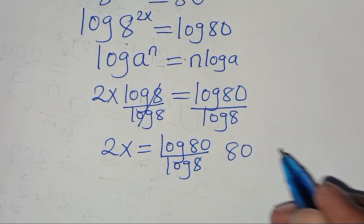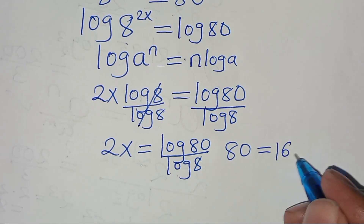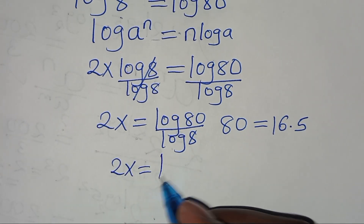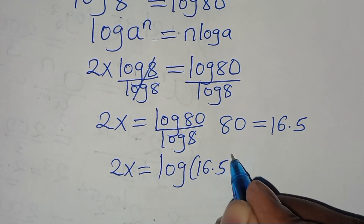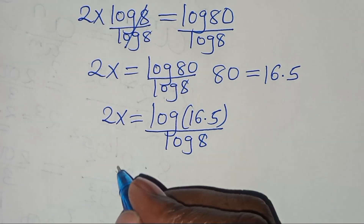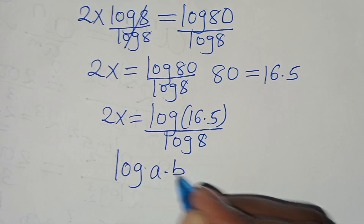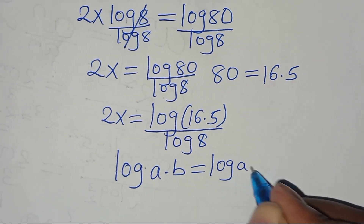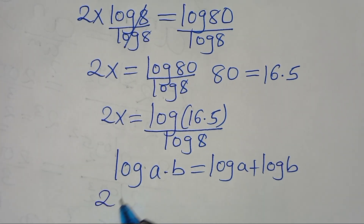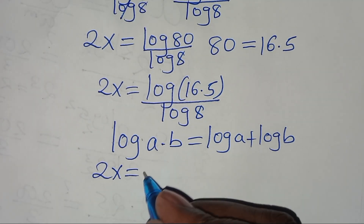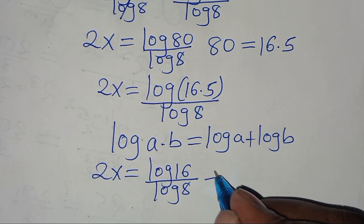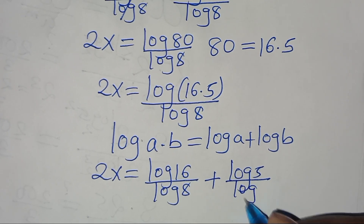We can express 80 as 16 multiplied by 5, so this implies that 2x equals log(16 times 5) divided by log 8. Since log(16 times 5) is in the form of log(a times b), we can express this as log a plus log b. Applying this logarithm property, we have 2x equals log 16 divided by log 8, plus log 5 divided by log 8.